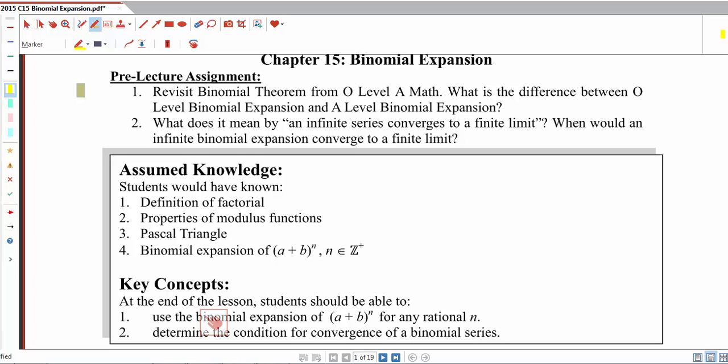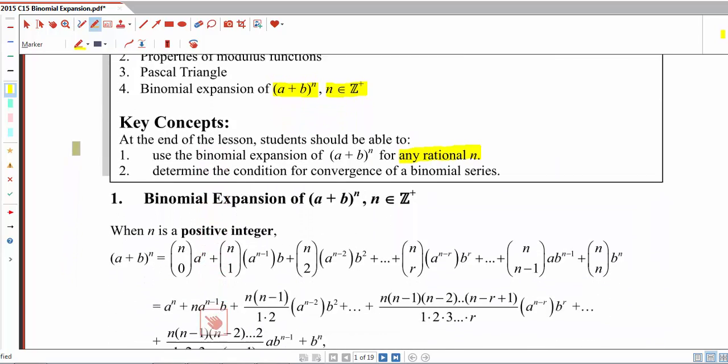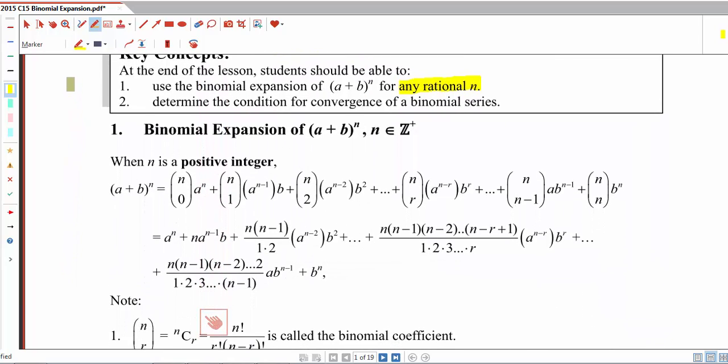In O-levels, we have learned about the binomial expansion of a plus b to the power of n for positive integers of n. However, in A-level mathematics, we will be exploring the use of binomial expansion for any rational number n, and it is not just limited to positive integers n. So in this video, we will revisit binomial theorem from O-level math.